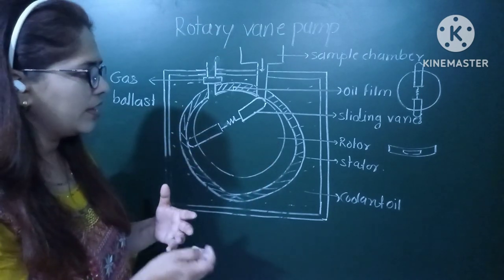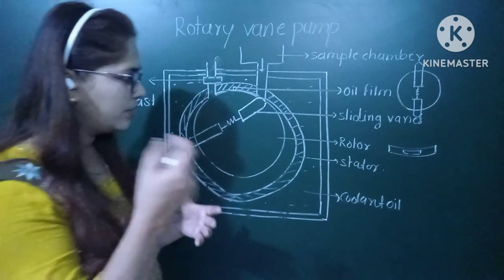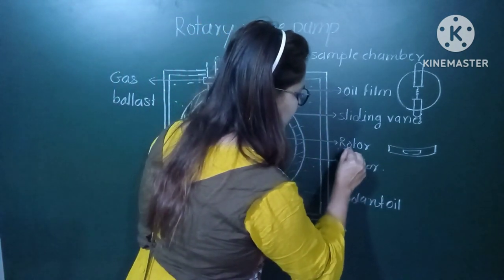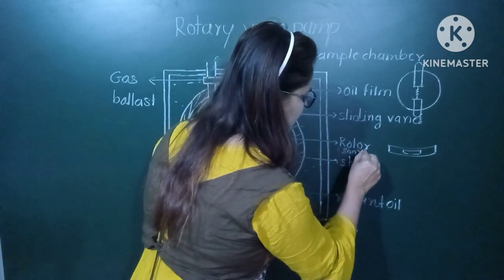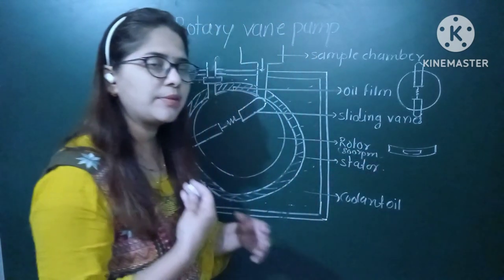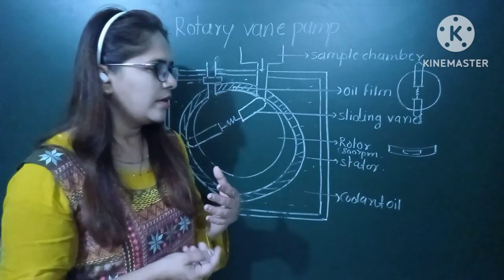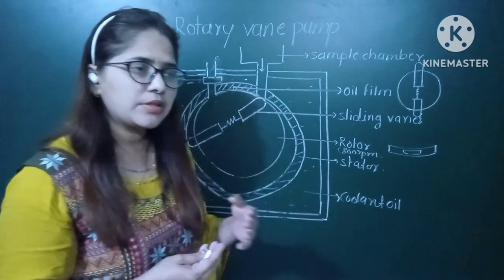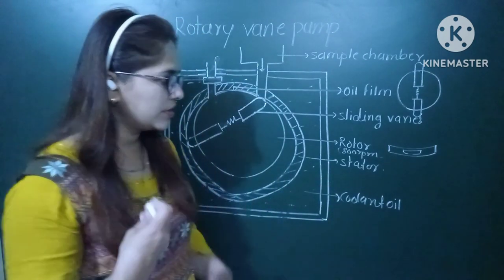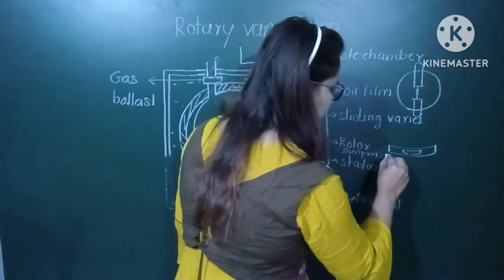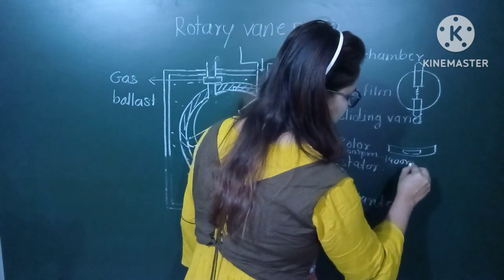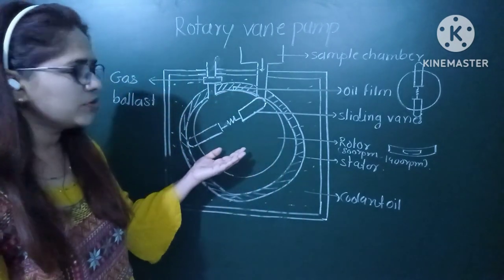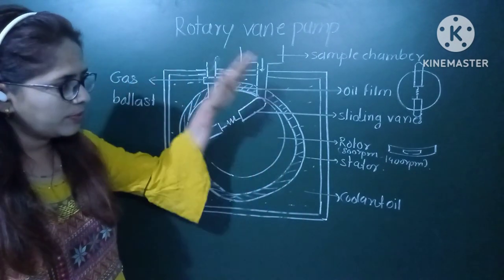The rotor is kept moving with an electrical motor at a speed of nearly 800 to 900 RPMs. The pumping speed depends on the RPMs. In updated versions, sometimes they consist of nearly 1400 to 1500 RPMs also. This is all about the construction. When writing an exam, this attractive diagram along with proper labels — sliding vanes, stator, rotor, coolant, and gas ballast — will get you full marks.